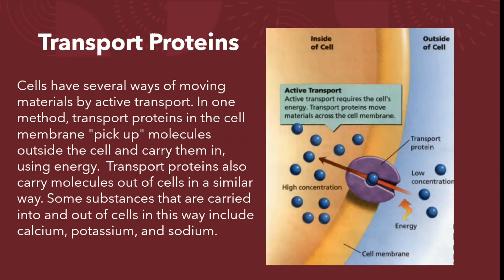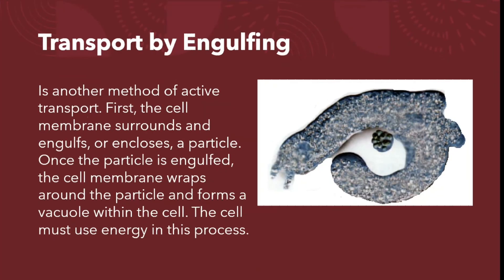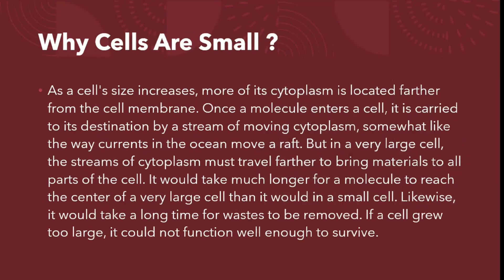Transport by engulfing is another method of active transport. First, the cell membrane surrounds and engulfs — or encloses — a particle. Once the particle is engulfed, the cell membrane wraps around the particle and forms a vacuole within the cell. The cell must use energy in this process.